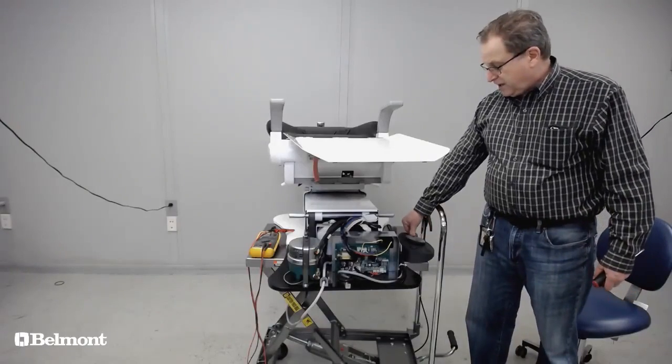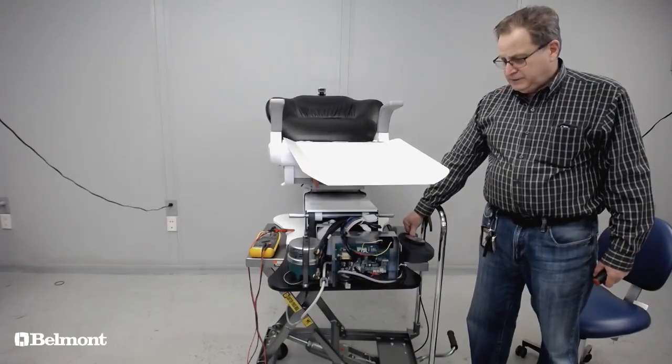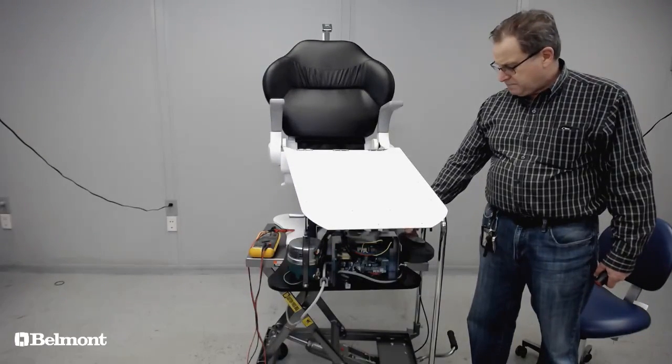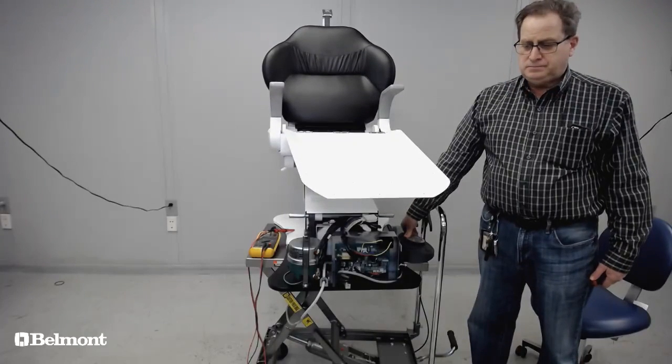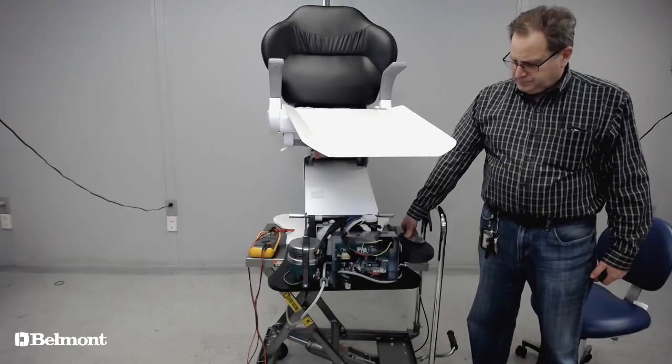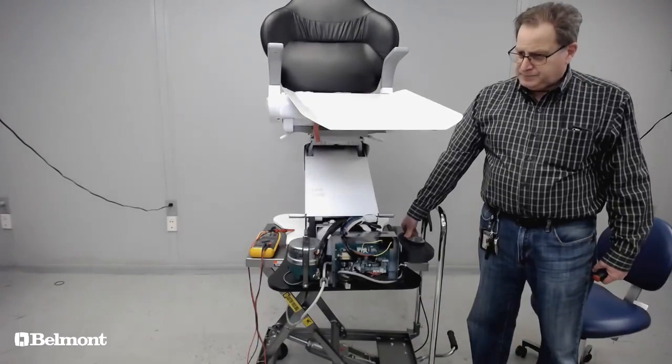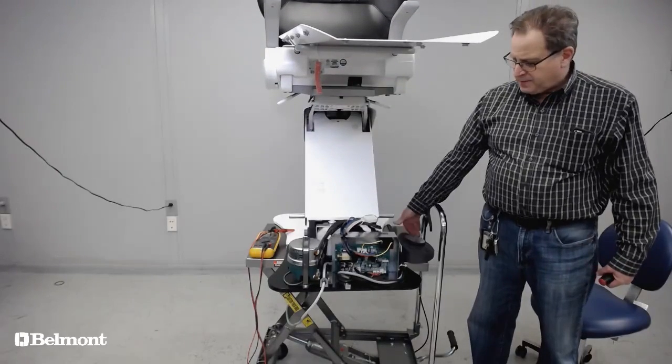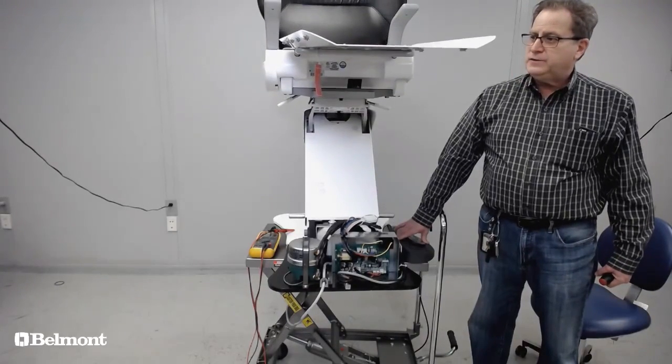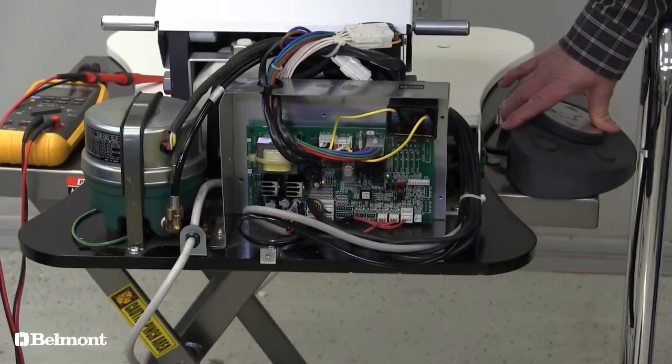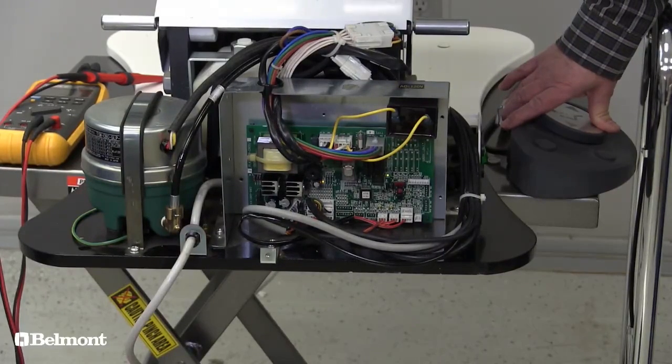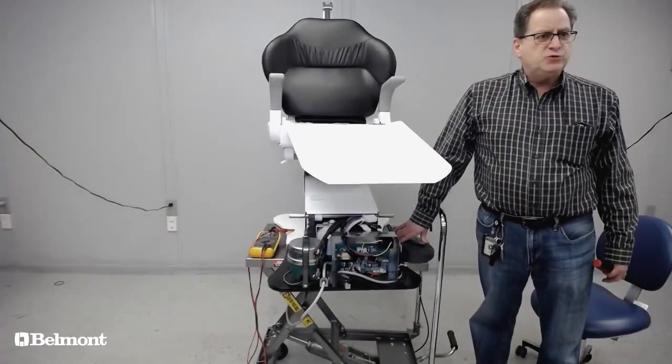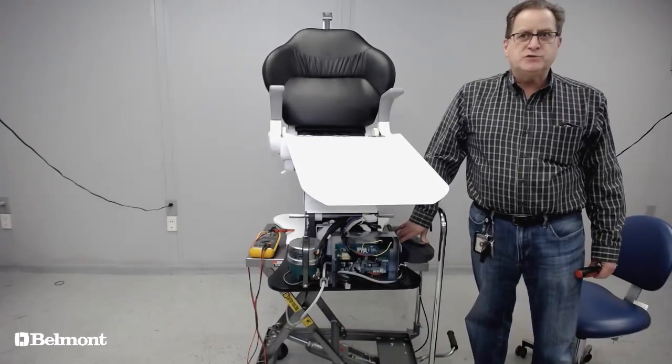The backrest will come up to where you had set it and stop. The base will go all the way up and stop where you've set it. And then the same with the base coming down - it will come down to where you had set it and it will stop. And that is all there is to setting your manual limits on the chair.